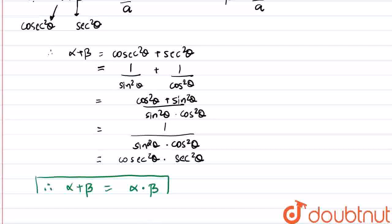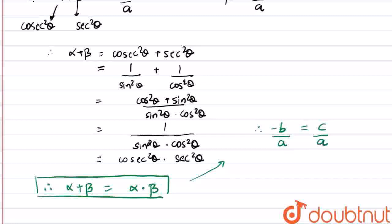This is equation number 1. From this we get -b/a = c/a, and thus -b = c. This is equation number 1.